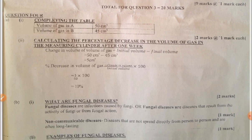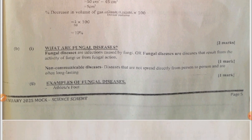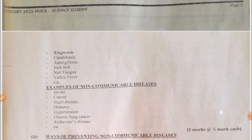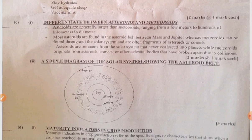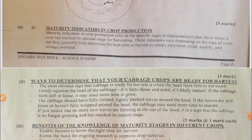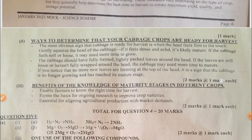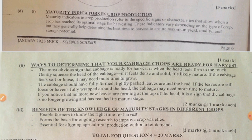From the readings, the volume of gas in A is 50 cm³ and the volume of gas in B is 45 cm³. You are supposed to use your knowledge in mathematics to find the percentage decrease in volume. The answers also include examples of fungal diseases and non-communicable diseases, differentiation between asteroids and meteorites, a diagram of the solar system showing the asteroid belt, maturity indicators in crop production, ways to determine that cabbage is ready for harvest, and the benefits of knowledge of maturity stages in different crops.